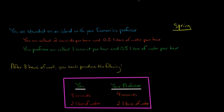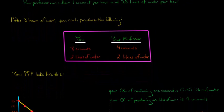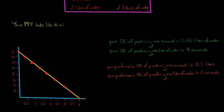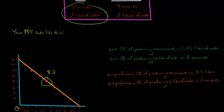Your production possibilities frontier would look like the following, and it's actually going to be linear in this example. Usually a PPF has that familiar curve because resources are not generally equally productive in all uses, but here we've got a linear PPF. If you produce zero liters of water, you could produce 16 coconuts, and if you produce zero coconuts, then you could produce four liters of water. Each point along the PPF is efficient in production — for example, the point (8, 2): you collect eight coconuts and two liters of water. That point is efficient in production.